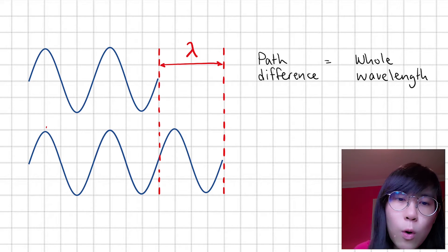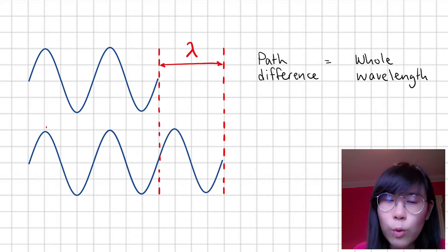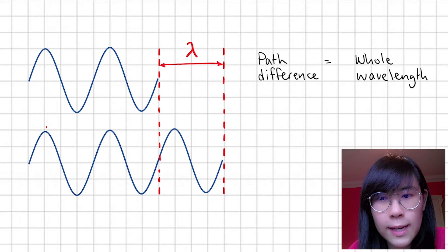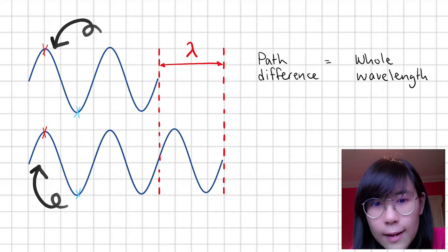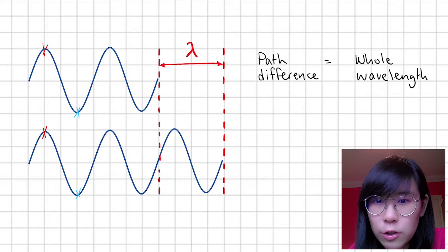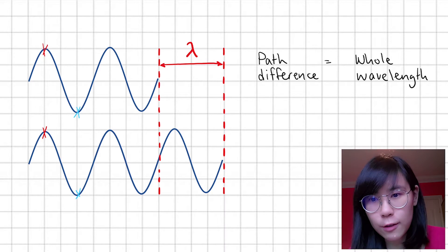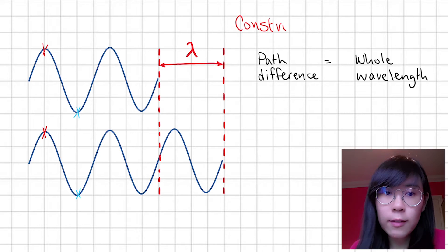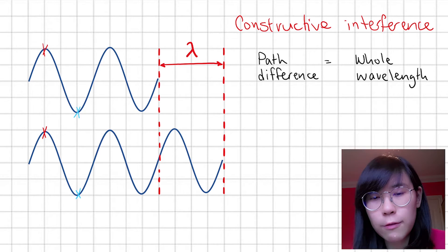If they now overlap with each other, or we say that they superpose or interfere, each point on the waves will add up to produce a resultant wave that has a larger amplitude. When the waves add together to give us a bigger wave, the situation is called constructive interference.